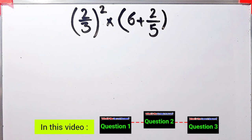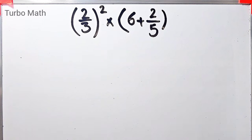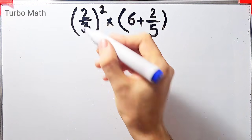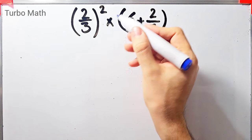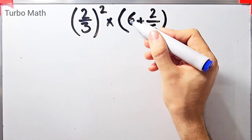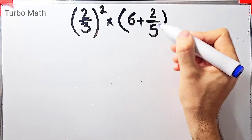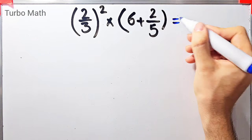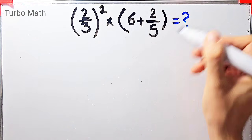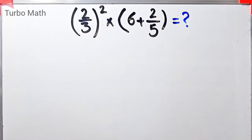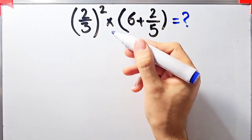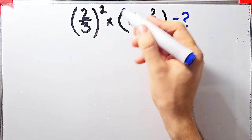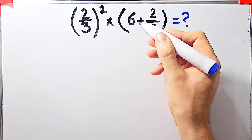Hi friends, welcome to Turbo Mass channel. In this video we are going to solve three questions about the PEMDAS rule. The first question is: two over three to the power of two, times open parentheses six plus two over five close parentheses. In this question we have exponent, multiplication, parentheses, and addition.